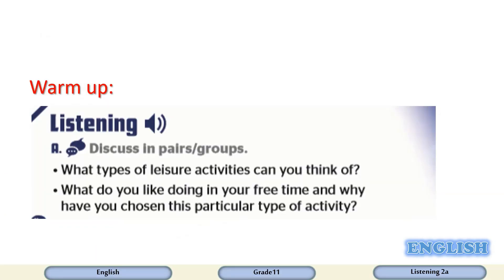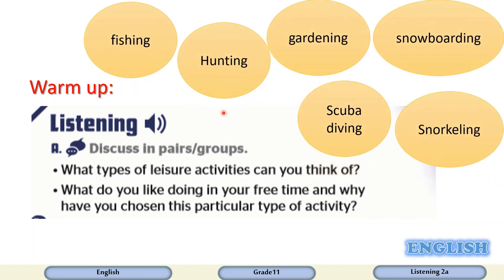All right, let's get started with activity number A, page 26 on your student book. Question number one: what types of leisure activities can you think of? There are different types of leisure activities that make you active, such as fishing, hunting, gardening, snowboarding, scuba diving, and snorkeling.